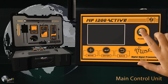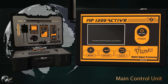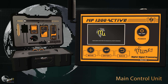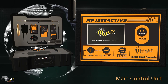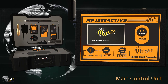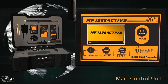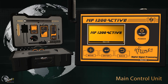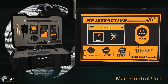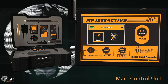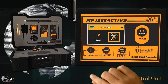To operate the device and adjust its settings, turn it on by pressing and holding the power button for a few seconds, then wait for the welcome interface to finish. The main menu will display the battery indicator, search menu, and settings menu.